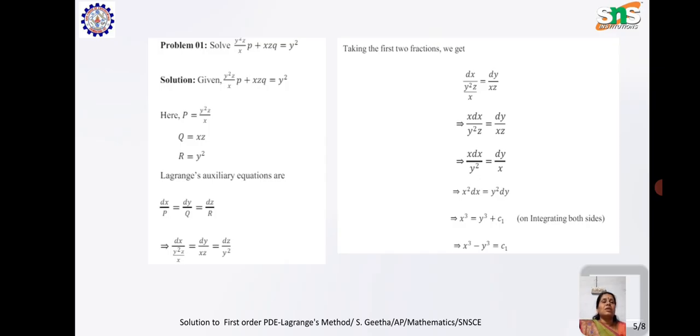we get x³/3 = y³/3 + c₁/3, which gives x³ = y³ + c₁. From this, c₁ = x³ - y³.